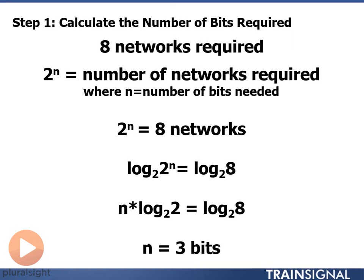The first step is to calculate the number of bits required. We want to find out how many bits we need to borrow in order to accommodate 8 networks. We take the value 2 to the power of n, and that equals the number of networks required, where n is the number of bits needed. This is 2 to the power of n — not n times 2. So we say 2 to the n equals 8 networks.